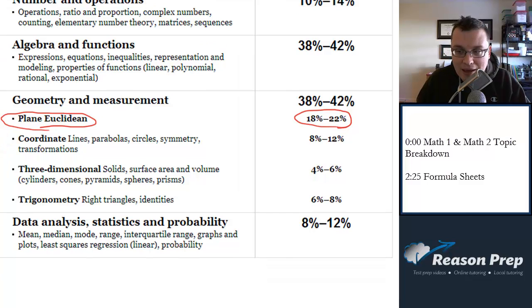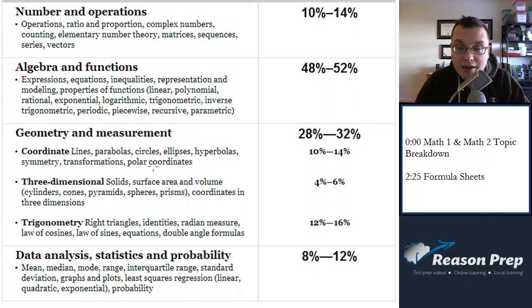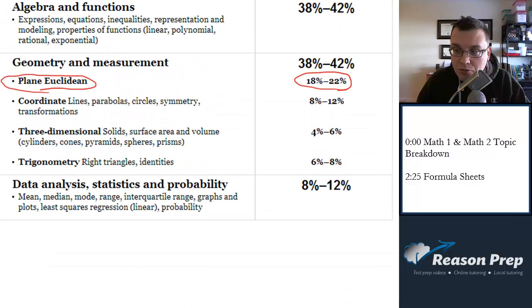You've got a lot of that, whereas in Math 2, which is down here, you've got none of it. The difference is, number one, there's less geometry in Math 2 than there is in Math 1, 28% to 32% compared to 38% to 42%.